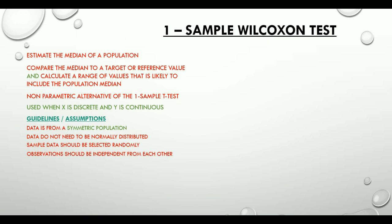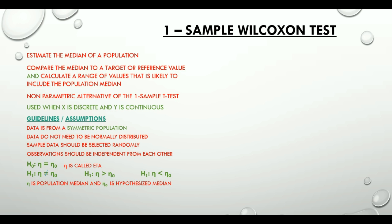The null hypothesis for the one sample Wilcoxon test is eta equals eta-zero, and the alternative hypothesis could be not equal to, greater than, or less than, depending on whether it is a two-tailed or one-tailed test. Eta is a Greek symbol representing the population median, and eta-zero is the hypothesized median. It is very important to note that if the assumption of symmetry fails, we use the one sample sign test.